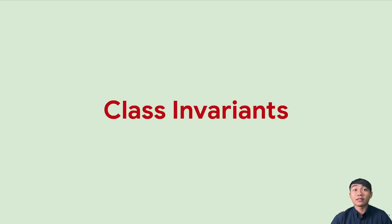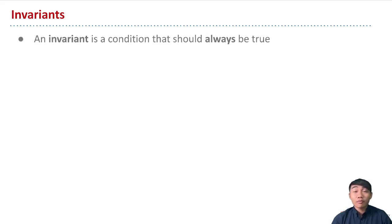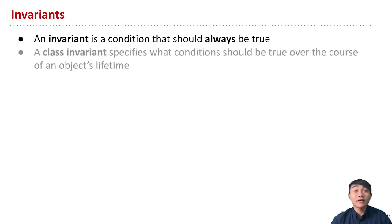Let's talk about class invariants. So what is an invariant? If we break down the word invariant, it means not varying or not changing. So it's a condition that should always be true. And in the context of classes, a class invariant specifically describes a condition that should always be true over the course of an object's lifetime.